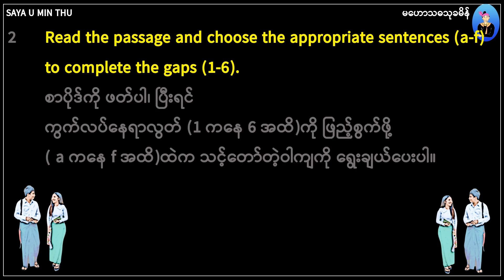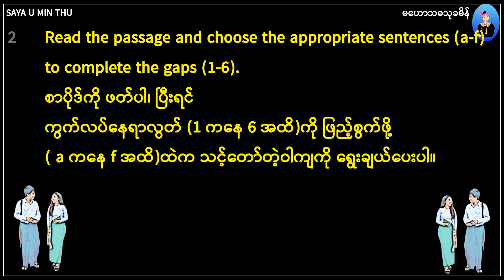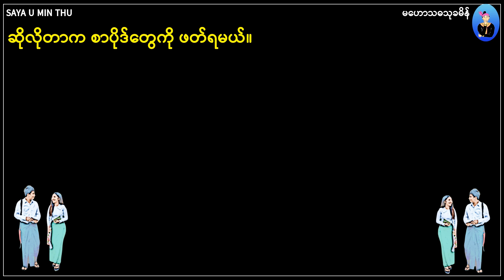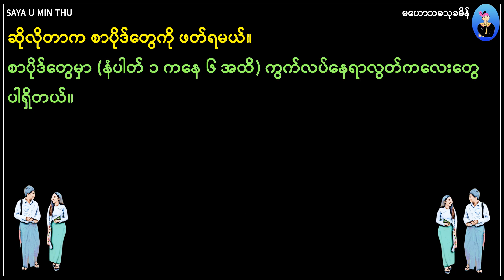Read the passage and choose the appropriate sentences A to F to complete the gaps 1 to 6. F: The topics for small talk depend on where the conversation is taking place.